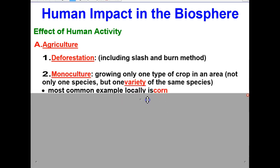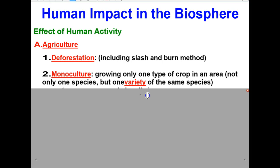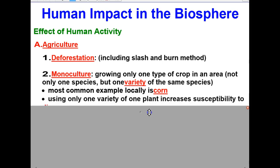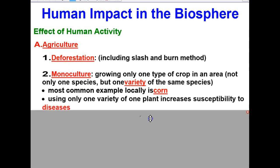Another thing to consider is what is called monoculture. Monoculture is growing only one type of crop in an area — not only one species, but one variety of the same species. This can damage the ecosystem, and the most common example locally is corn. When a farmer grows one variety of corn in a field year after year, it is especially damaging to the ecosystem because it increases susceptibility to diseases.